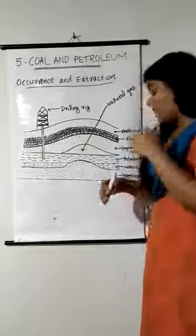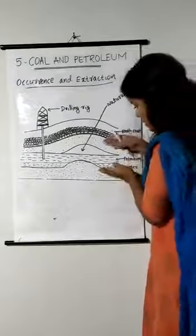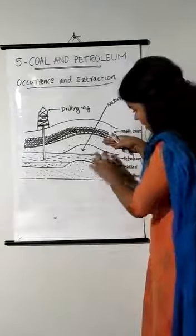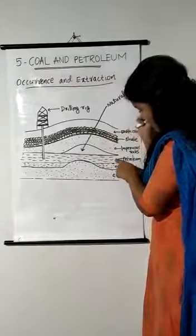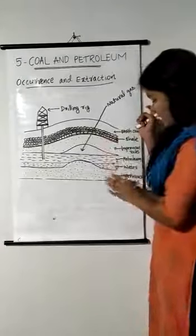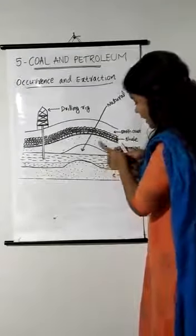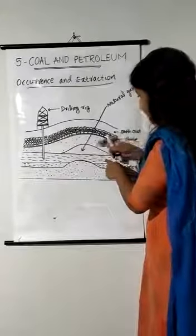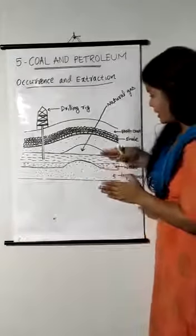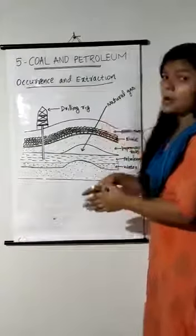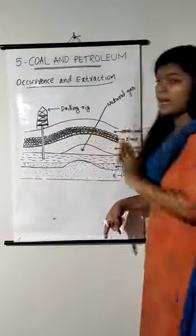Petroleum is lighter than water, therefore it floats over the water. Between the impervious rock layers, three substances are present: water at the bottom, petroleum above the water, and natural gas above the petroleum. So the order from bottom to top is: water, petroleum, and natural gas.